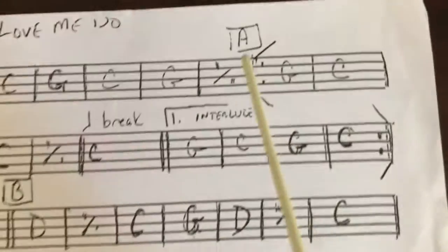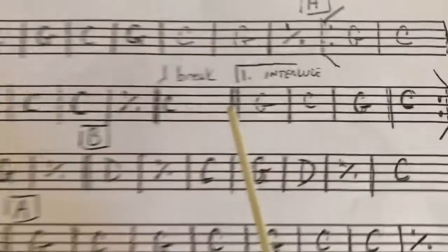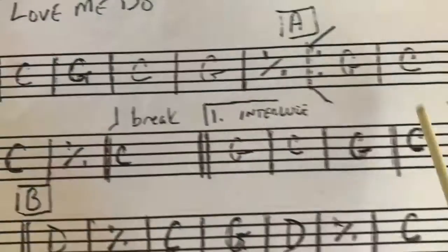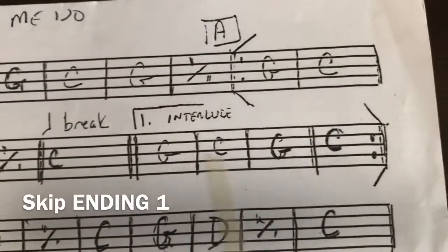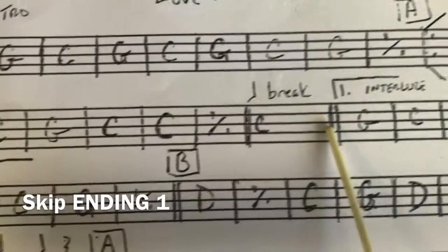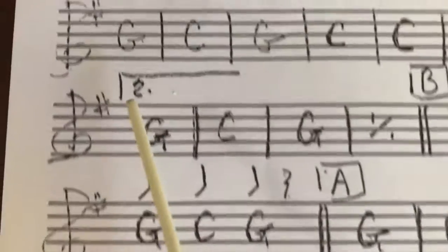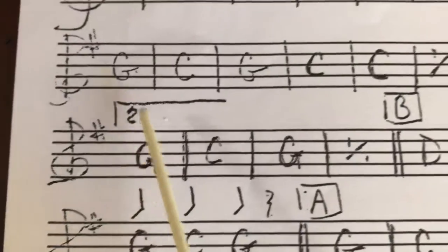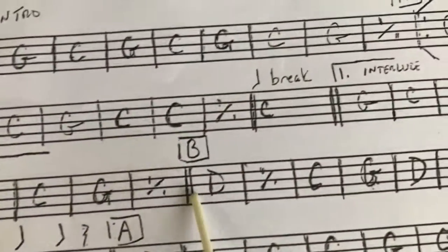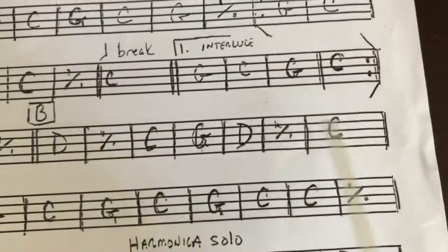So that brings us to our second time going through A — same thing. Now we're going to get to this break again. This time we're not going to do ending one — we're going to skip it. So instead of doing ending one again, we go from this break directly to here. There's a two here — that's the second ending. G, C, two measures of G. Then we get to our B section for the first time.